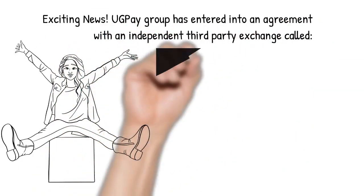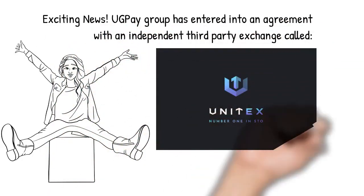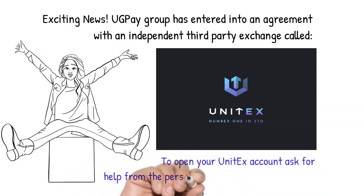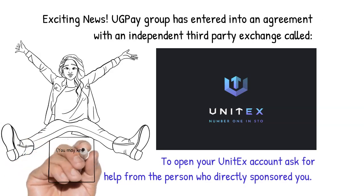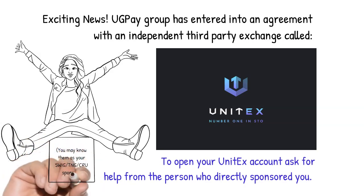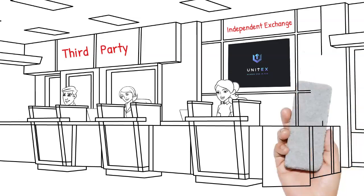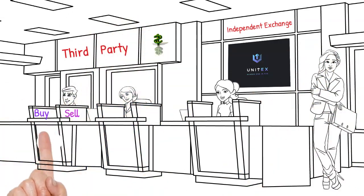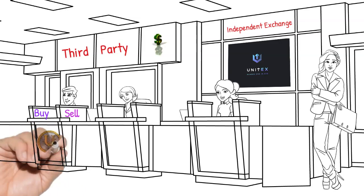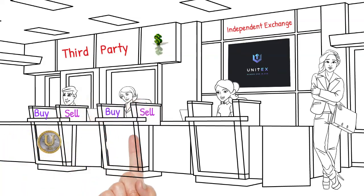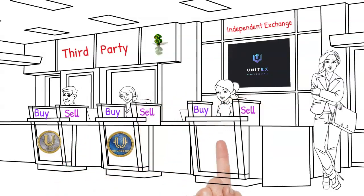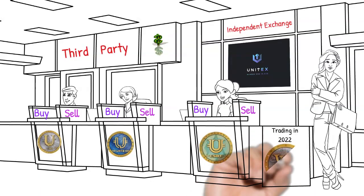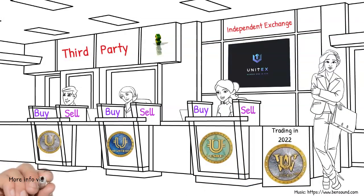Exciting news! UGPay Group has entered into an agreement with an independent third-party exchange called Unitex. To open your Unitex account, ask for help from the person who directly sponsored you — you may know them as your SWIG, TNG, or CRU sponsor. Welcome to Unitex, the third-party independent exchange where you can buy and sell unlocked CRU tokens, buy and sell UNTB tokens, buy and sell USDU stablecoins, and, in 2022, they will start trading WCRU security tokens.